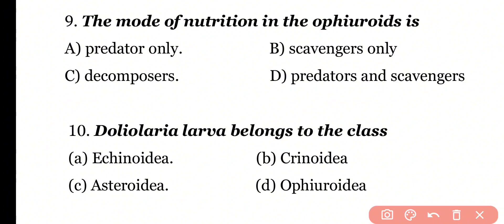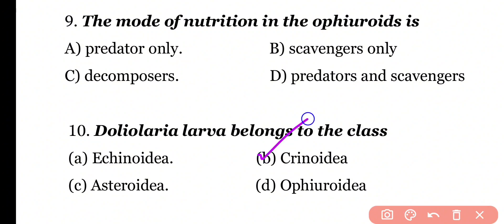Question 10: Doliolaria larva belongs to the class Echinoderms, Crinoidia, Asteroidia, or Ophiuroidia? Correct answer is Option B. Doliolaria larva is present in class Crinoidia. Examples of class Crinoidia are Antedon and Sea lilies.